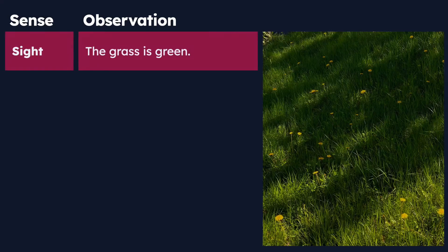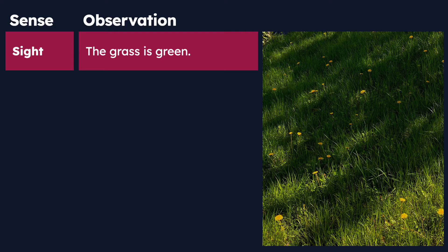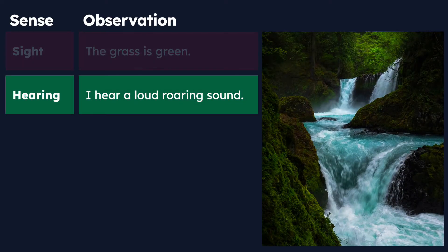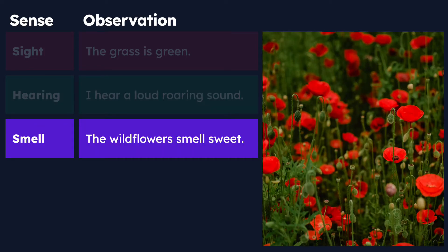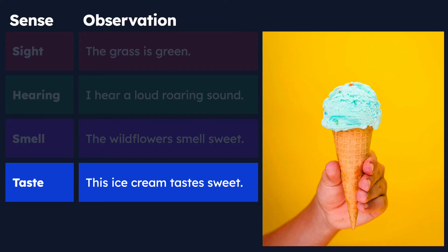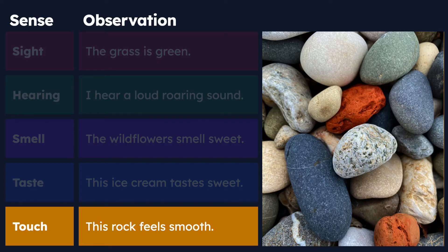Let's look at some examples. We're going to list in a table our senses and a sample observation that could be collected using that sense. With sight, we can see that the grass is green. With hearing, we can hear a loud roaring sound in the woods. With smell, the wildflowers smell sweet. With taste, this ice cream tastes sweet. And with touch, this rock feels smooth. These are all simple observations — things we can collect using our five senses.